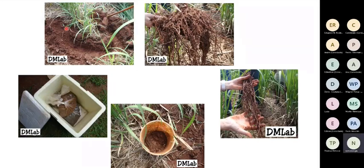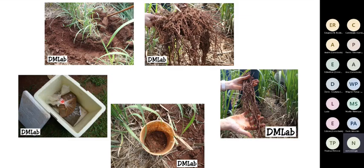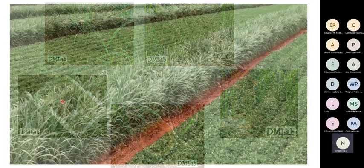Para a amostragem, deve-se fazer uma meia-lua a uns 30 centímetros do centro da touceira, bater o enxadão e puxar para que as raízes saiam compridas. Pega-se uma porção das raízes e um pouco de terra do mesmo buraco, vai-se misturando as sub-amostras num balde. No fim, coloca-se num saquinho, etiqueta, amarra e deixa numa caixa de isopor durante o dia. No final do dia deixa num ambiente mais fresco e leva ao laboratório analisar, mais ou menos uma vez por semana.